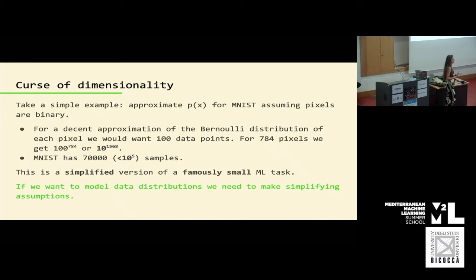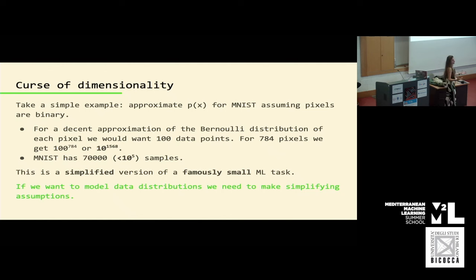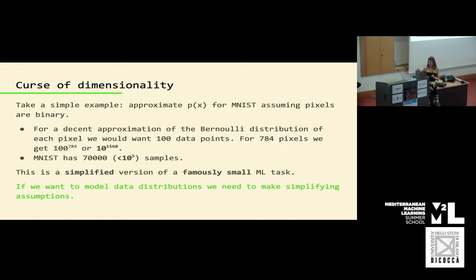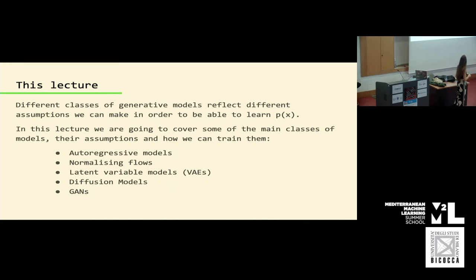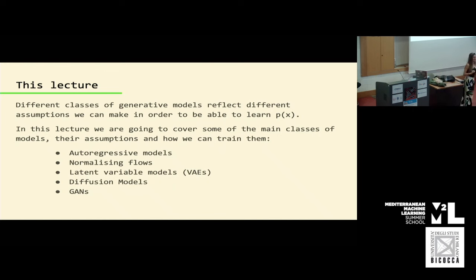So we can't just model p(x) from samples and data — there's no hope for that. We're going to have to start making assumptions and simplifications such that, hopefully with datasets as big as 10^5, we get anywhere near sampling. The fact that we can sample from MNIST shows there are ways and it's not all hopeless. In this lecture we're going to cover five main classes of models and how they address this: autoregressive models, normalizing flows, latent variable models, diffusion models — which I'll touch on lightly as you'll have a full lecture on them — and finally a short nod to GANs.